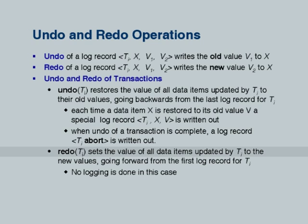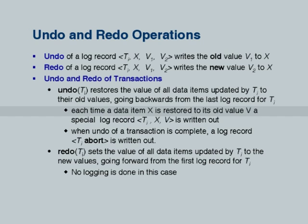Redo, on the other hand, always goes forward. When you undo a transaction in this recovery algorithm based on repeating history, every time you apply an undo you write out a log record TI, X, V — where V is the old value being restored. This log record does not need two values because you are restoring an old value and do not care about the new one. This is a special compensation log record written when executing an undo operation.